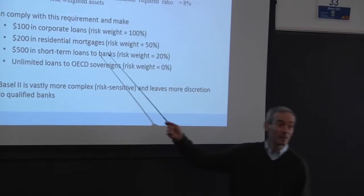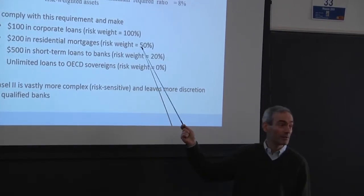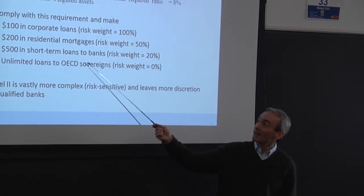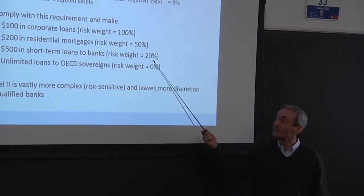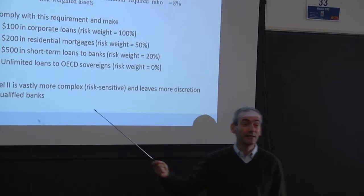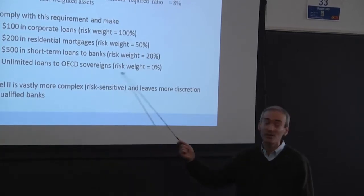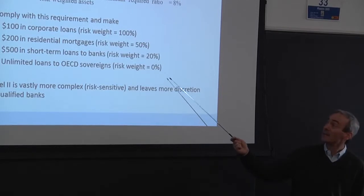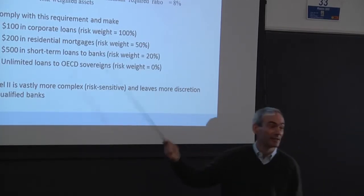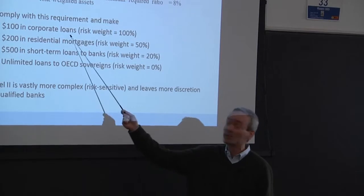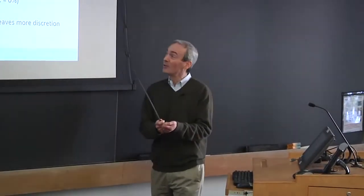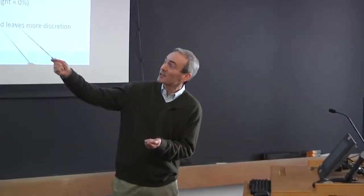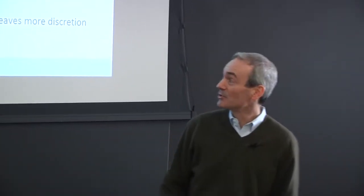But I could make up to $200 in residential mortgage loans because those get a risk weight of 50%. And I could make up to $500 in short term loans to banks because those get a risk weight of 20%. And there's no limit on how much money I can lend to the Greek government because all OECD sovereigns have a risk weight of 0%. So lending to Greece, according to this scheme, is less risky than, say, lending to Apple, right? Because Apple gets a risk weight of 100%. So you can see that this is, first of all, a very crude scheme. And hopefully you can see that also this kind of scheme is going to create very strong incentives. This is going to have a big influence on what sort of asset mix a bank is going to end up choosing.